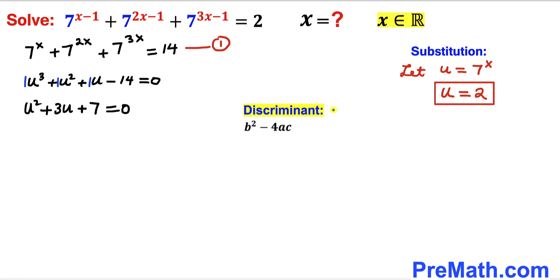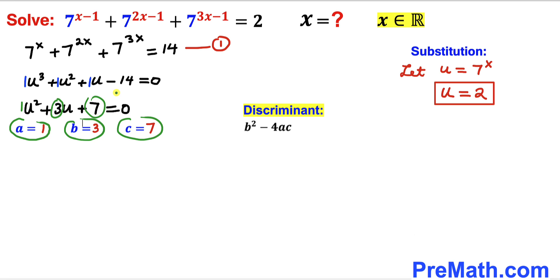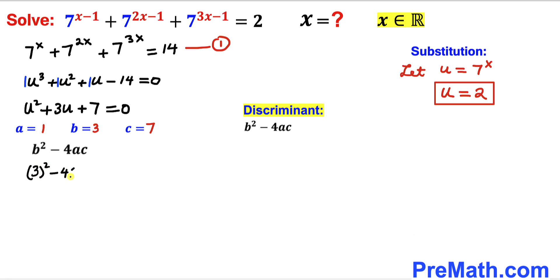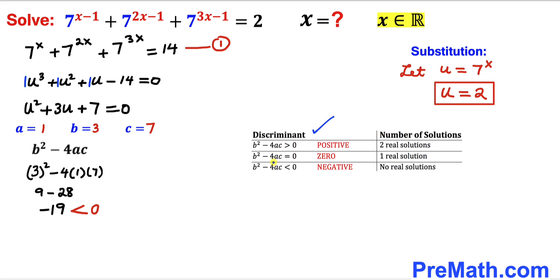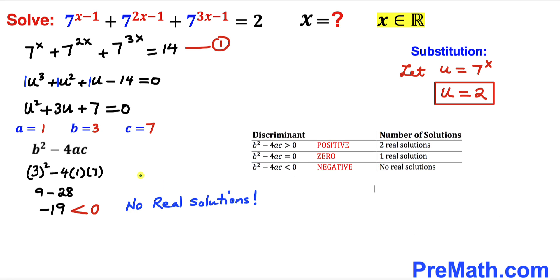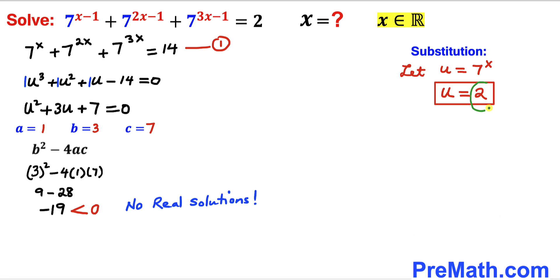Now let's recall the discriminant: b²−4ac. Here a=1, b=3, c=7. So the discriminant is 3²−4(1)(7) = 9−28 = −19. Since −19 is less than 0, this quadratic equation has no real solutions. Therefore our only real solution is u = 2.